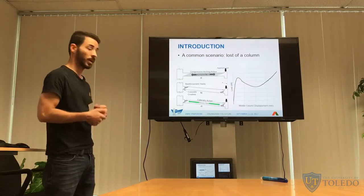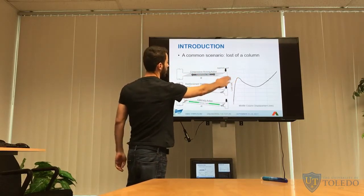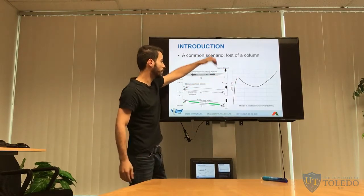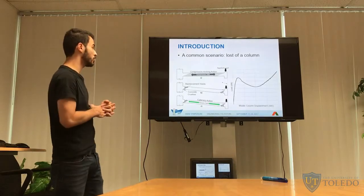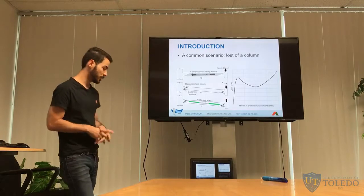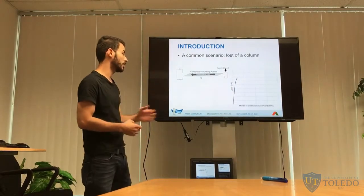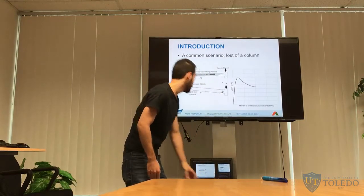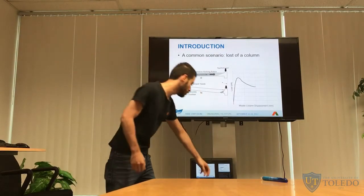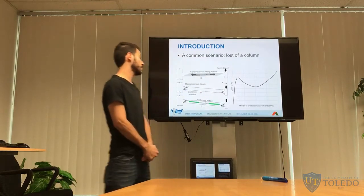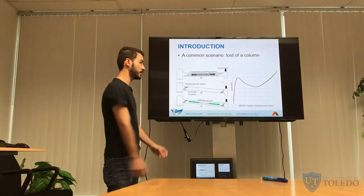A common scenario of progressive collapse is the loss of a column. Here, represented by part of a reinforced concrete frame, we show only half — this is the column we would theoretically lose, with the applied load pushing down at that location. Three load-resistant mechanisms would occur: the first is called compressive arch action, named because the load versus middle column displacement response looks like an arch. Next is the plastic hinge region due to reinforcement yielding and concrete crushing, causing a loss of load resistance. This leads to the last mechanism: catenary action, occurring due to large displacements where the beam starts acting in tension, providing additional load capacity.